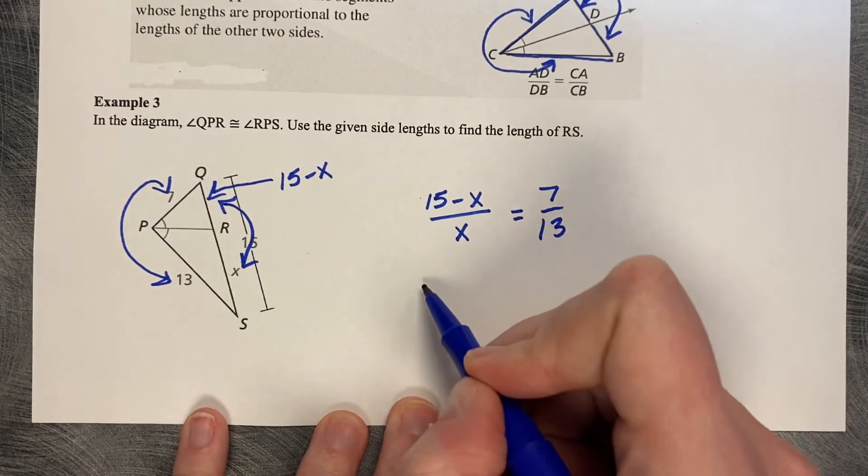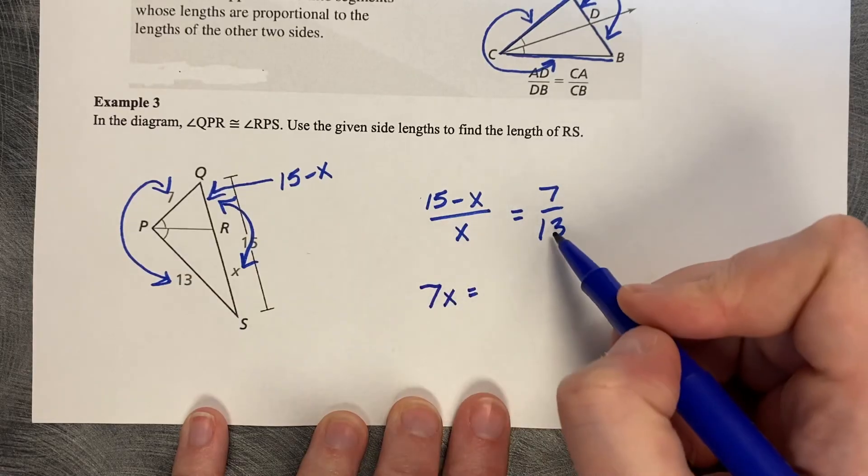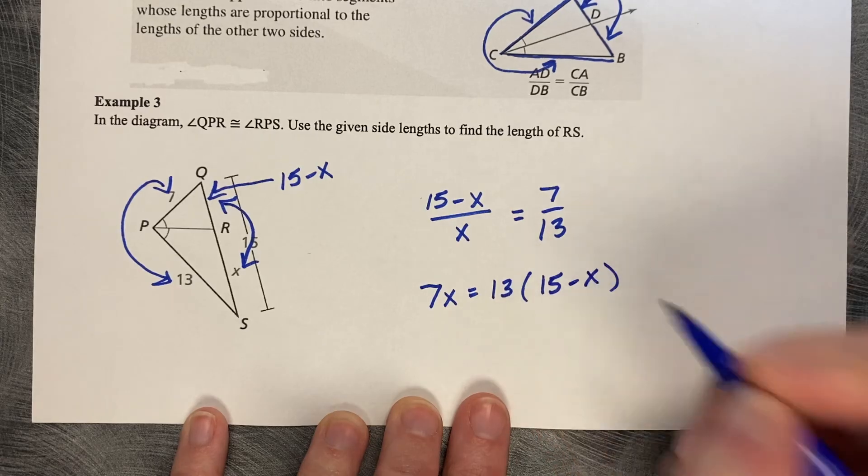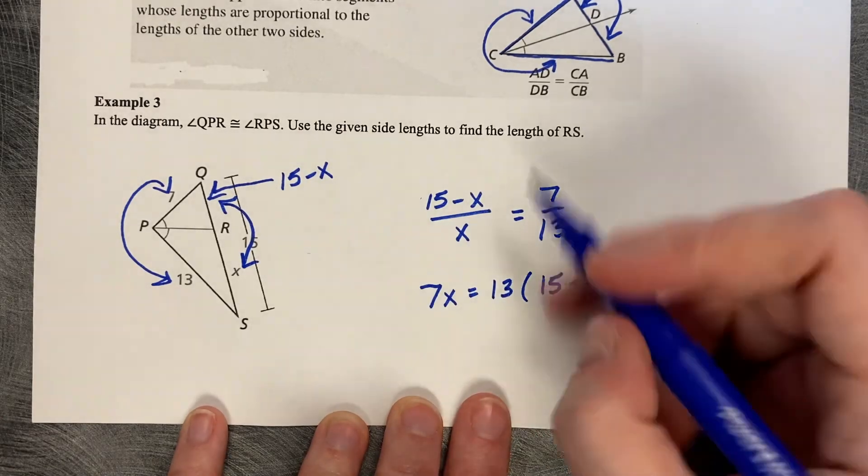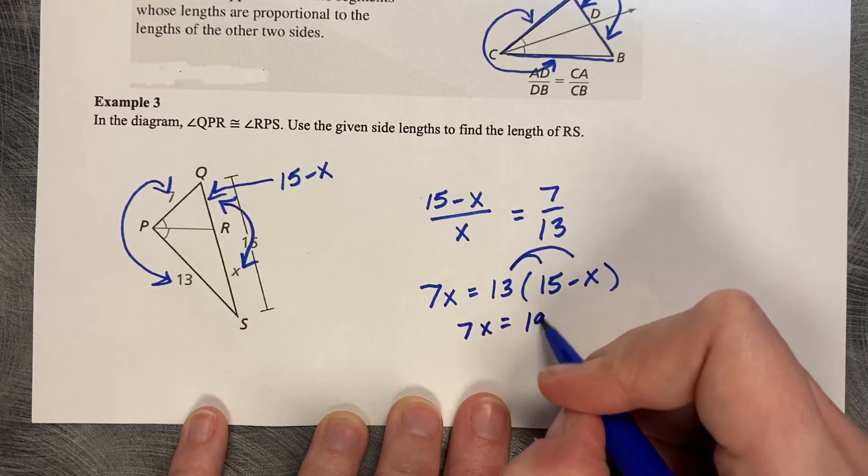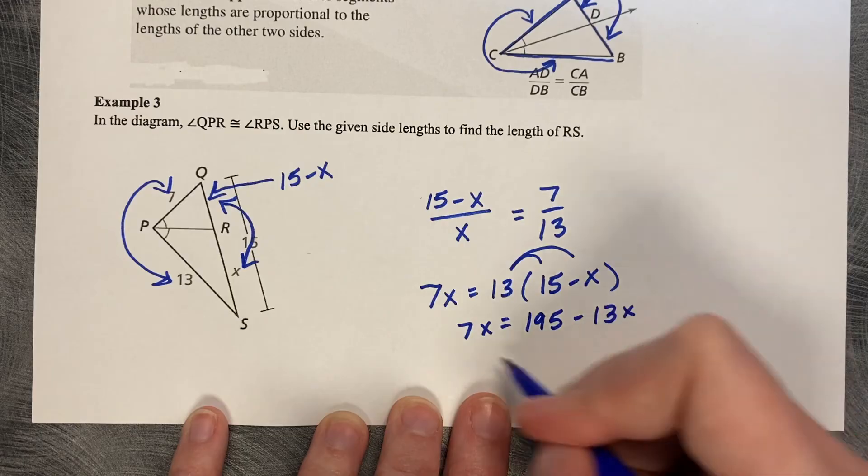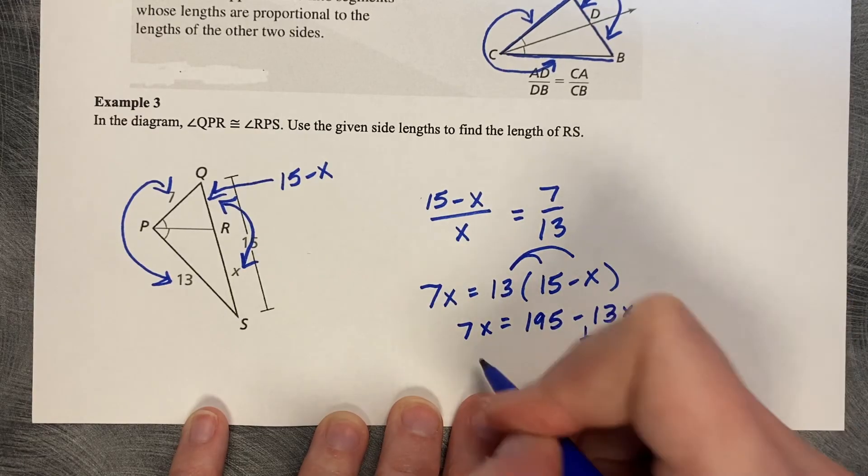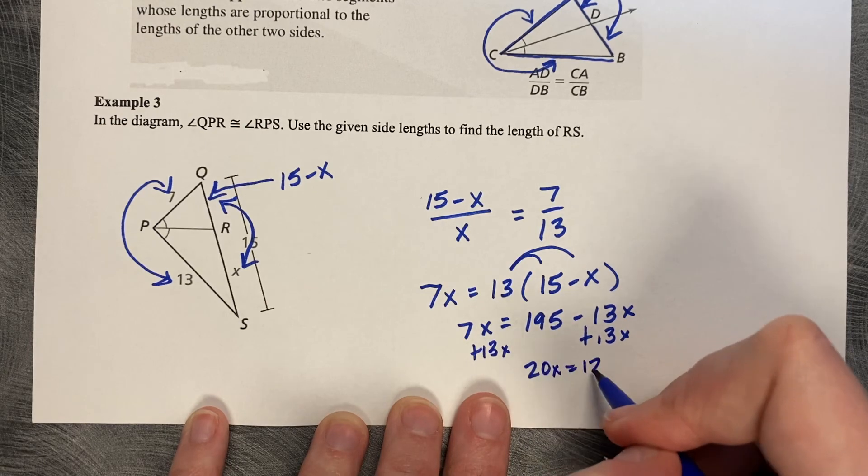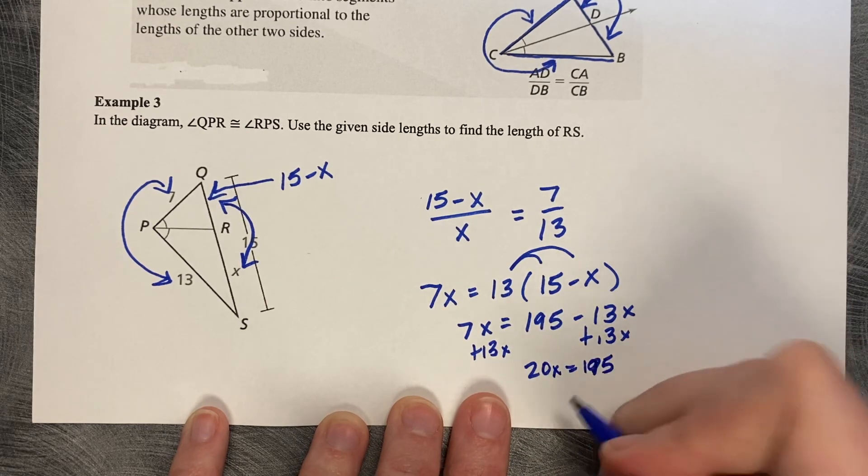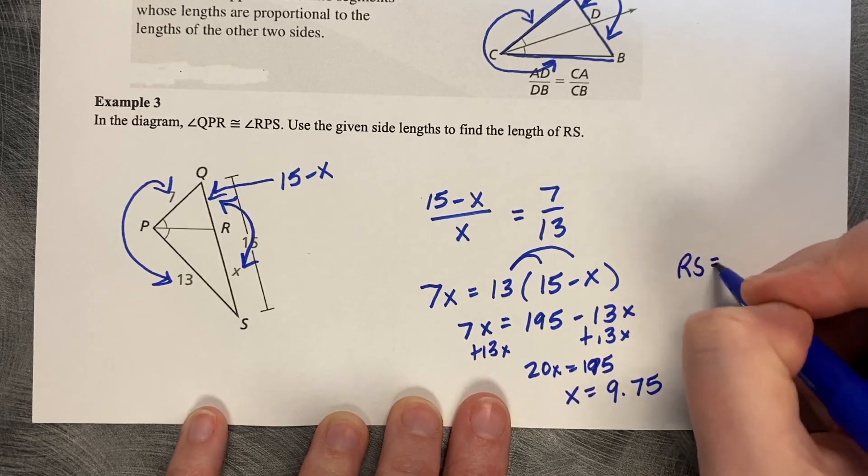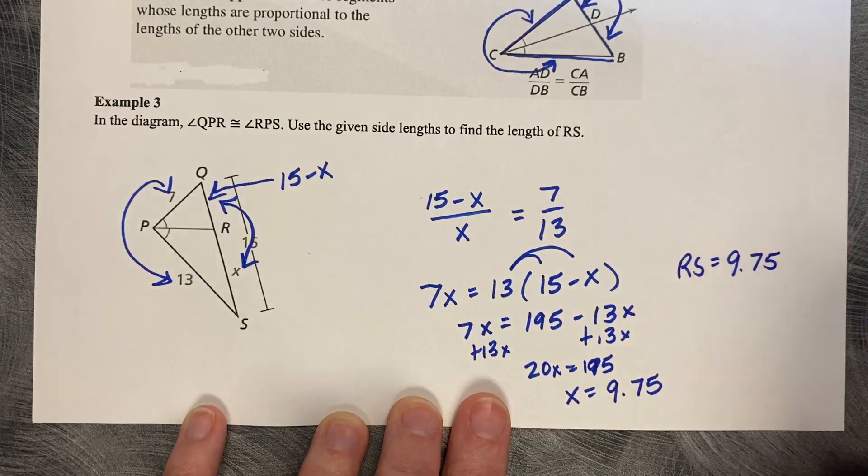So X times 7 is 7X. 13 times 15 minus X, I'm going to write it like this because the 13 applies to both pieces. Distribute the 13: 7X equals 13 times 15 is 195 minus 13X. Add 13X. So then that's going to be 20X equals 195. Divide by 20 and X equals 9.75. So RS equals 9.75.